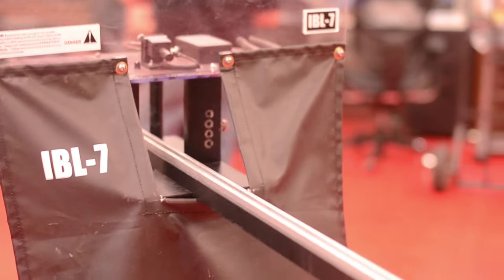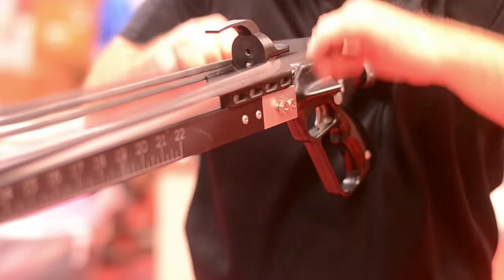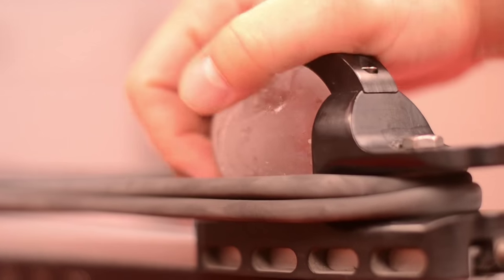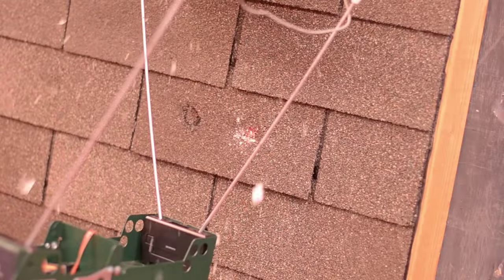Using patented tools such as our IBL-7, we've identified hail damage thresholds for many types of roofing such as asphalt composites and shingles.